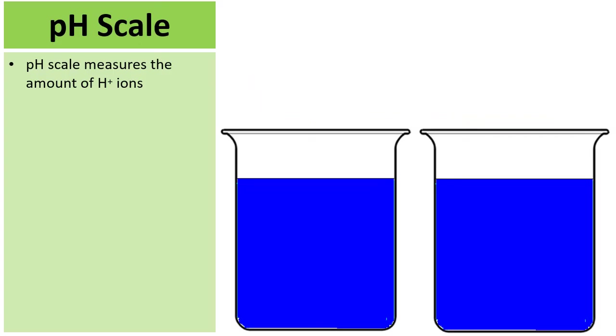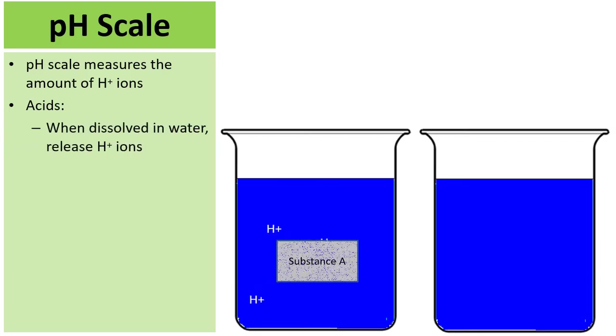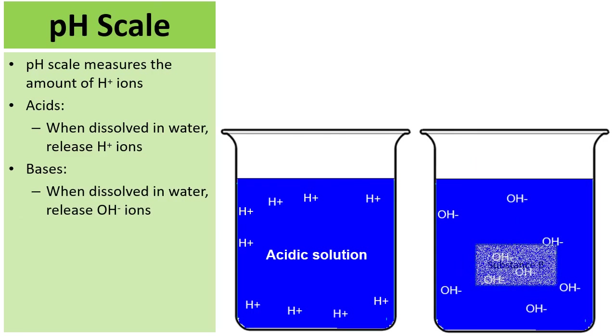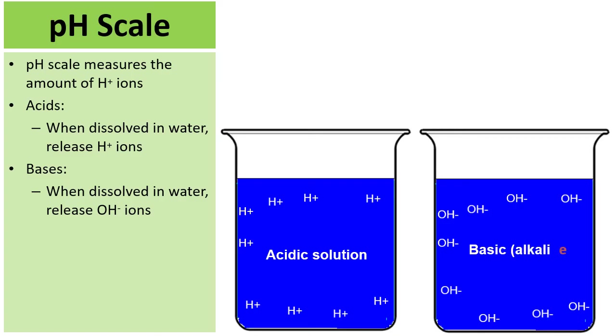So here's a couple beakers of water. Let's go into acids and bases in a little more detail. Acids first. If I were to drop a block of substance A into the beaker on the left and over time substance A dissolves and releases hydrogen ions, this would form an acidic solution. On the right hand side, focus on the bases. If I drop a block of substance B and it slowly dissolves and releases hydroxides, this would be characteristic of an alkaline or a basic solution.